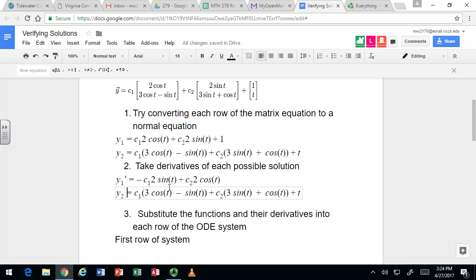For y2 prime, derivative of cosine is negative sine, derivative of negative sine is negative cosine, derivative of sine is cosine, and the derivative of cosine is negative sine, and the derivative of t is one.